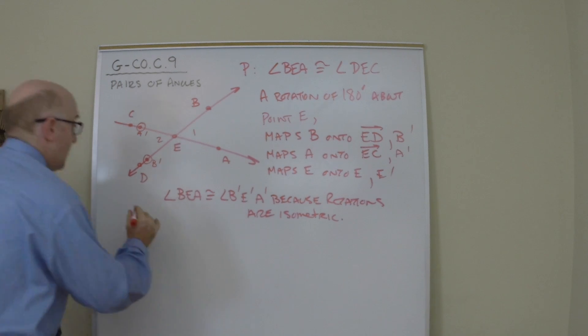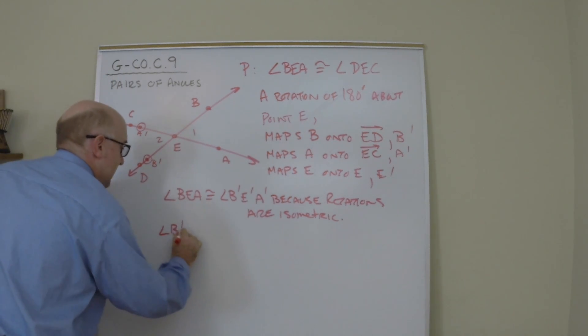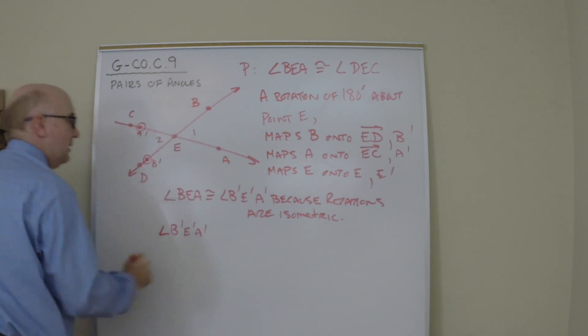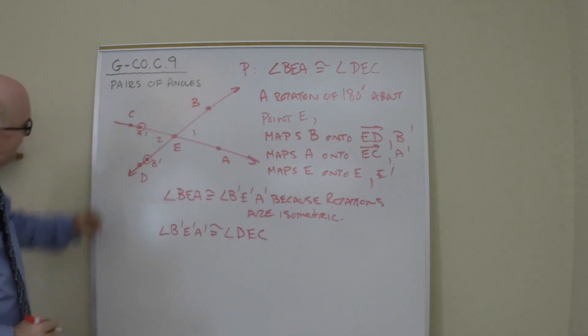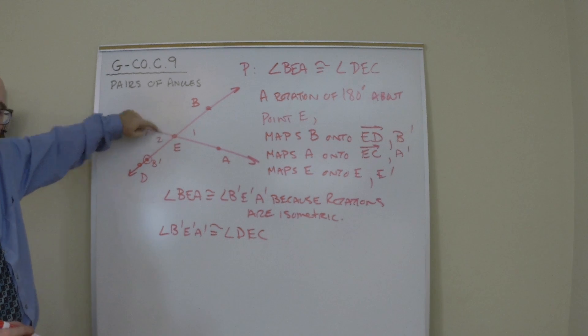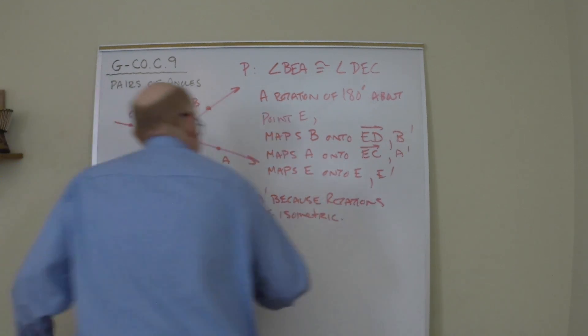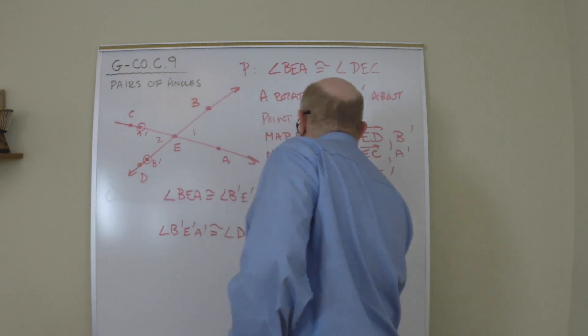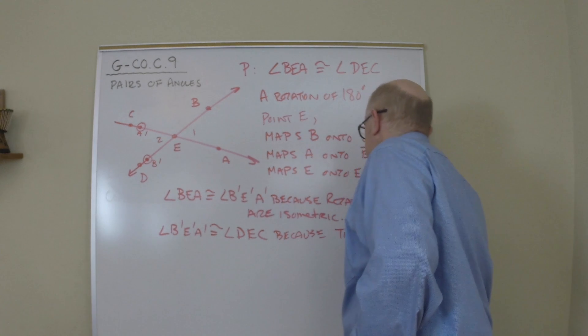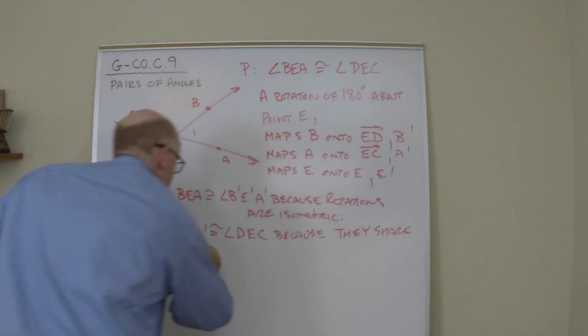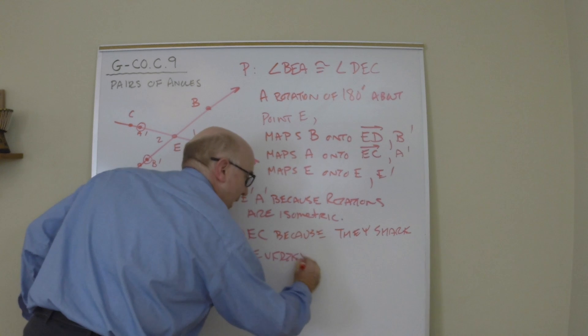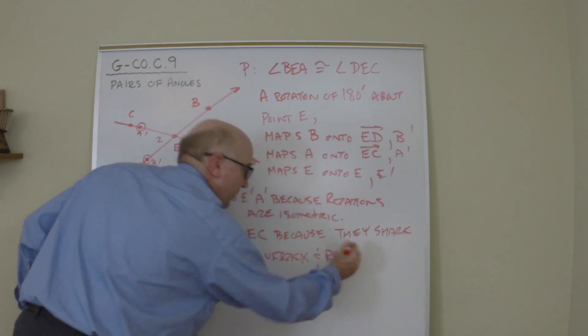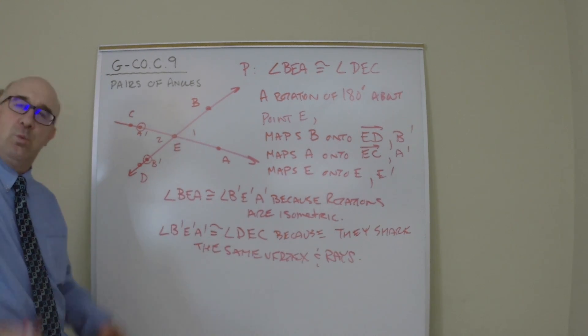Here's the second thing we know. Now angle B prime E prime A prime, this guy right here, is congruent to the original DEC. Now why would that be? Well look. We landed it on that ray. We landed E on itself, and we landed A on that ray. Anyway, they have to be congruent because they share the same vertex and rays. In other words, we copied it directly onto the other item. We're almost done.